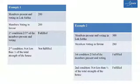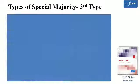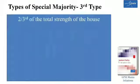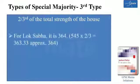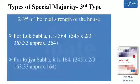Special majority of third type: two-third of the total strength of the house. This is the highest majority required for passing any resolution. For Lok Sabha, it is 545 into 2 by 3, that is 364 members. For Rajya Sabha, it is 245 into 2 by 3, that is 164 members.